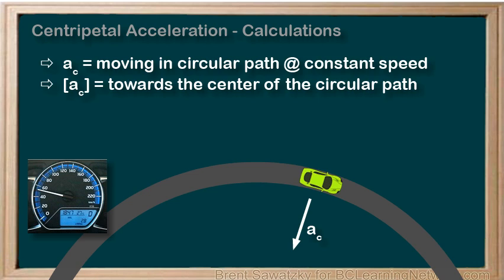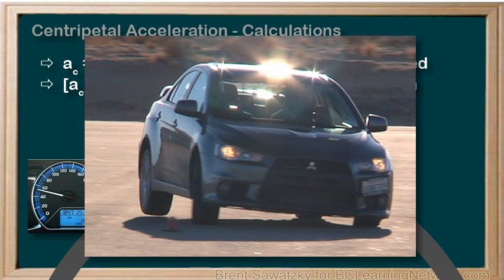At this point, we're going to learn how to calculate the magnitude of the centripetal acceleration — how fast is it accelerating? Before we begin, let's try and predict what factors might be involved here. If you're going to turn a corner in a parking lot, how could you create a greater centripetal acceleration?